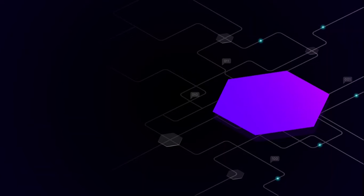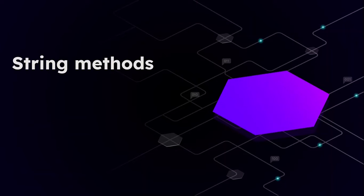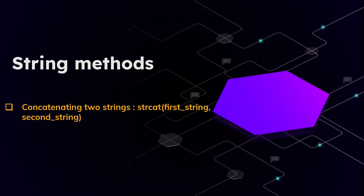You can also convert a string to uppercase or lowercase. Let's discuss the ones we're going to cover in this tutorial. The first method takes two strings and adds them together into one string — that is string concatenation, and the method is called strcat. One might think they just took those words and shortened them — for string they just took the first three characters.